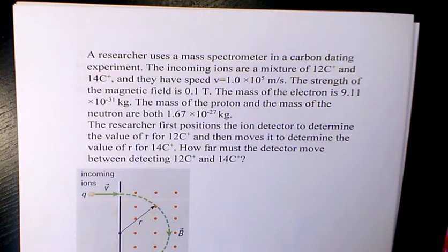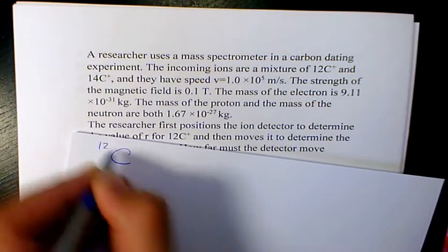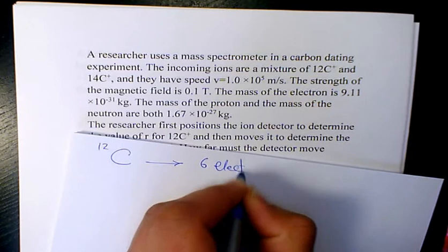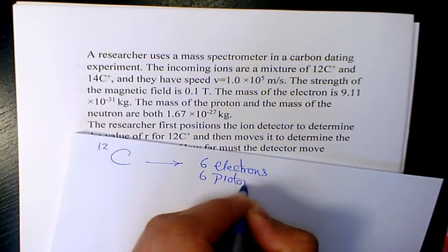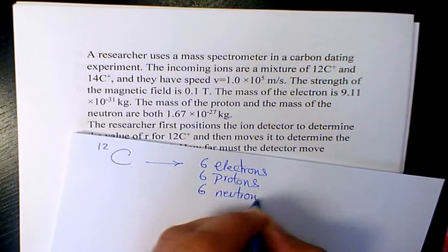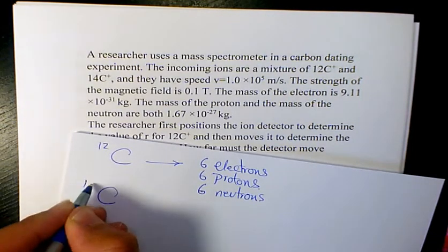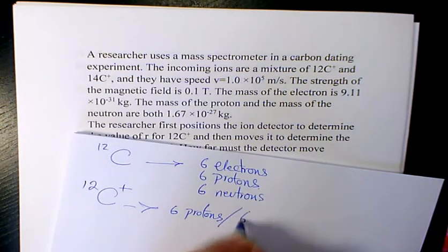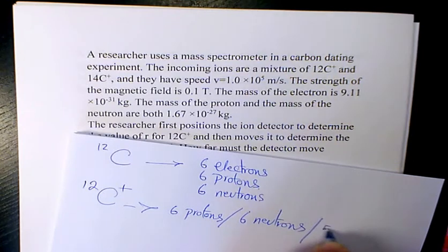First, we need to find the mass of C12+ and C14+. C12 has 6 electrons, 6 protons, and 6 neutrons. But C12+ means it lost one electron, so it has 6 protons, 6 neutrons, and 5 electrons.